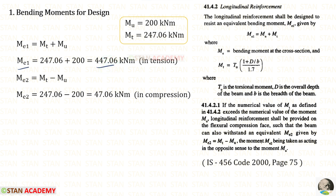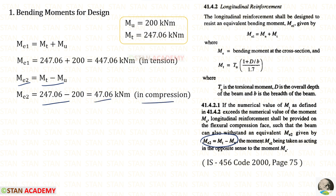This moment ME1 of 447.06 should be considered in the tension zone, that is at the bottom of the beam. Then using the relevant formula, we need to find the equivalent moment ME2. For that we will get 47.06. This moment ME2 acts in the compression zone, that is at the top of the beam.